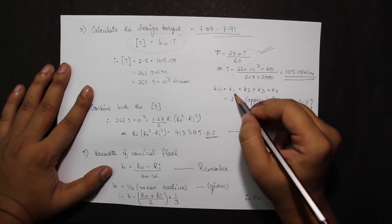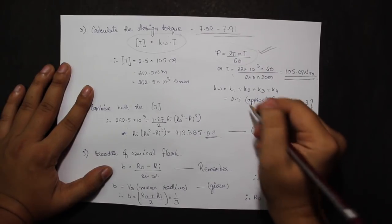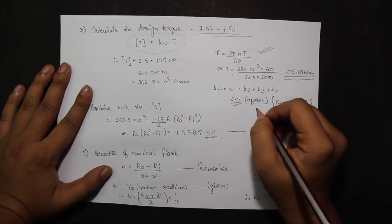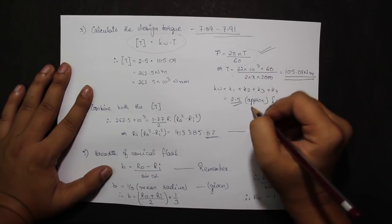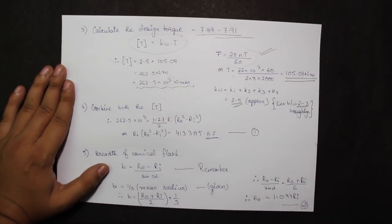kW should lie between 2 and 3, which is the approximate figure I had told. So I am taking 2.5. Multiplying both of these, I find that design torque comes out to be 262.5 into 10 to the power 3 Nm.